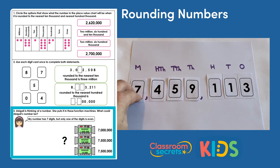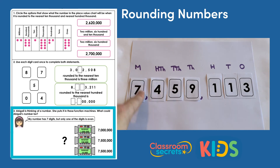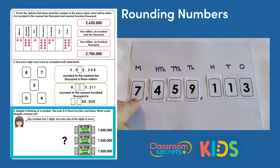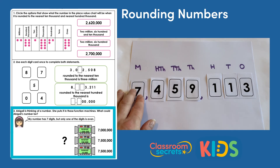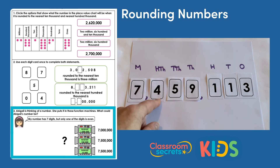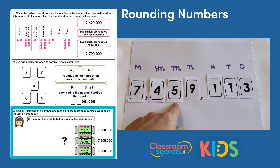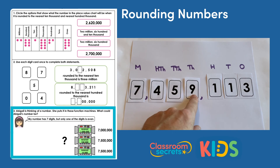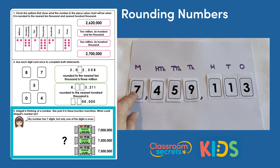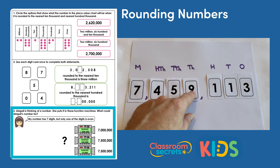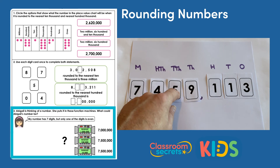Let's check the function machines with seven million, four hundred and fifty-nine thousand, one hundred and thirteen. For the nearest million, the hundreds of thousands digit is four, so we round down to seven million — that works. For the nearest hundred thousand, the ten thousands digit is five, so we round up to seven million, five hundred thousand — that works. For the nearest ten thousand, the thousands digit is nine, so we'd round up to seven million, four hundred and sixty thousand — that doesn't match seven million, five hundred thousand, so this combination doesn't work.